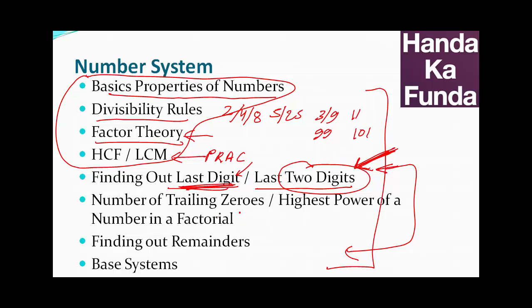Some of the other types of questions which have been asked, again rarely, not common, is find out the number of trailing zeros. Now, there are variations of this, that find out the highest power of a number in a factorial, which uses more or less the same concept as number of trailing zeros.